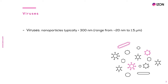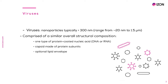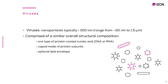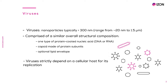Viruses are incredibly diverse nanoparticles which vary in their genome size, transmission routes, the tissues they infect, and whether they are cleared by the host or cause persistent infection. They are found in a wide range of sizes, with dimensions varying from around 20 nanometres to 1.5 micrometres. Viruses consist of one type of nucleic acid — either DNA or RNA — surrounded by a protein capsid made of numerous subunits, and they sometimes have a host cell-derived lipid layer called an envelope. A virus depends strictly on its cellular host for replication, as it uses the cell's energy and machinery for macromolecule synthesis.